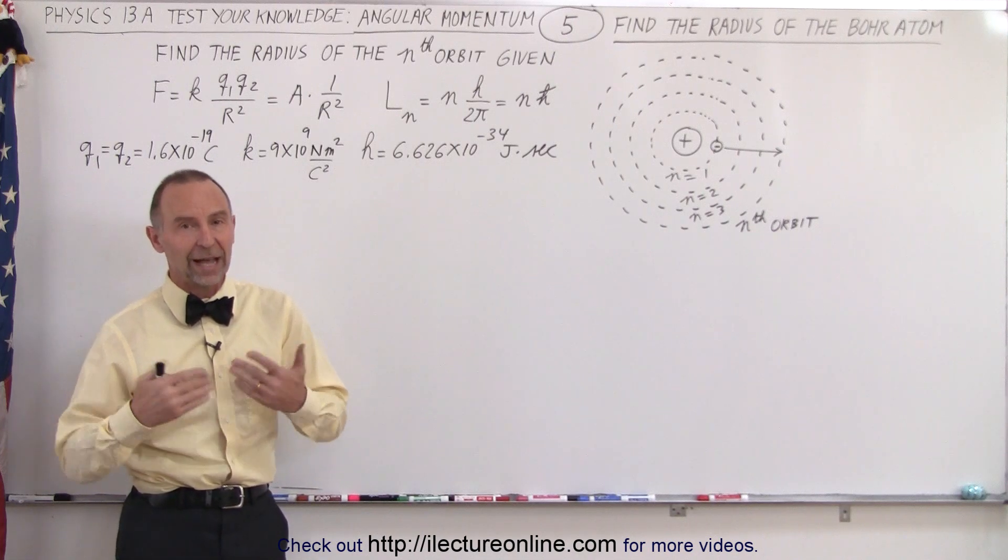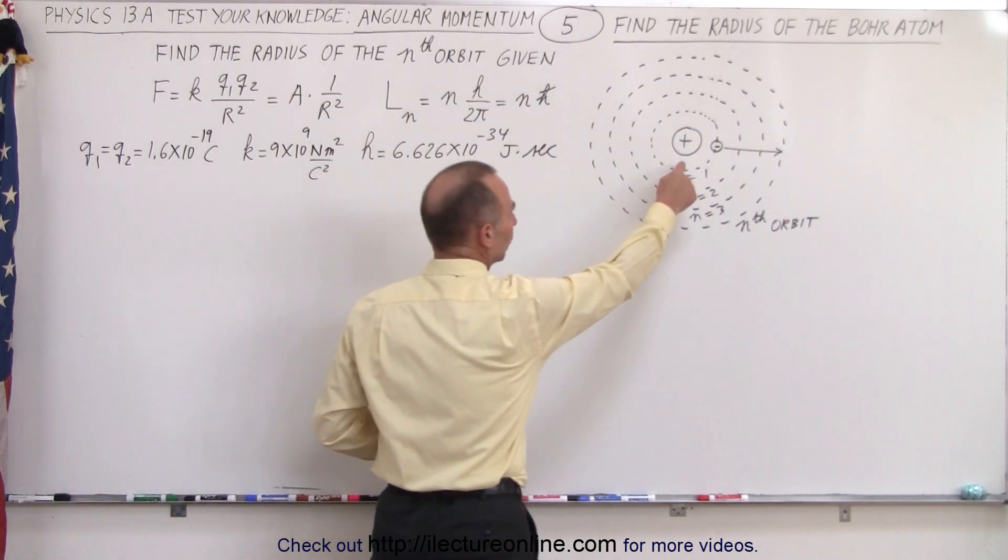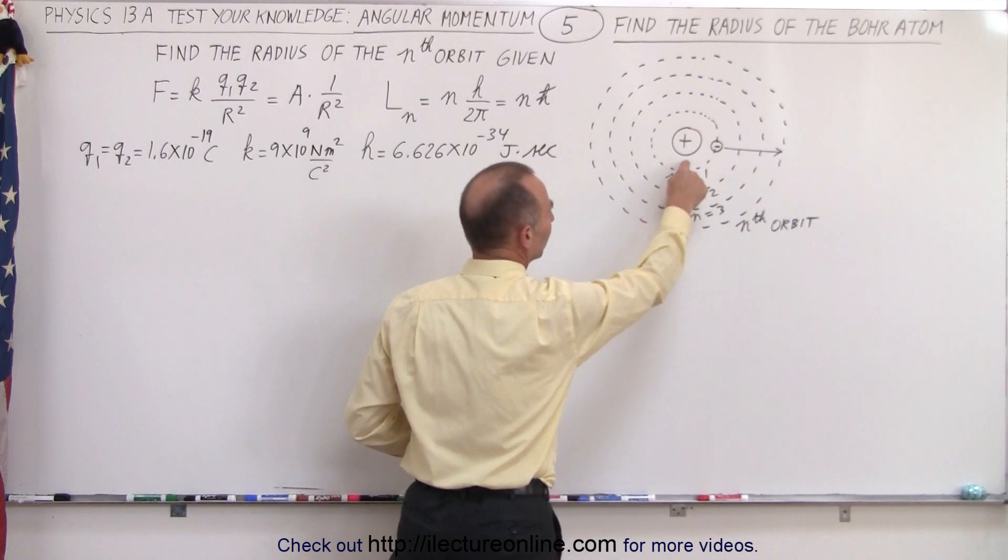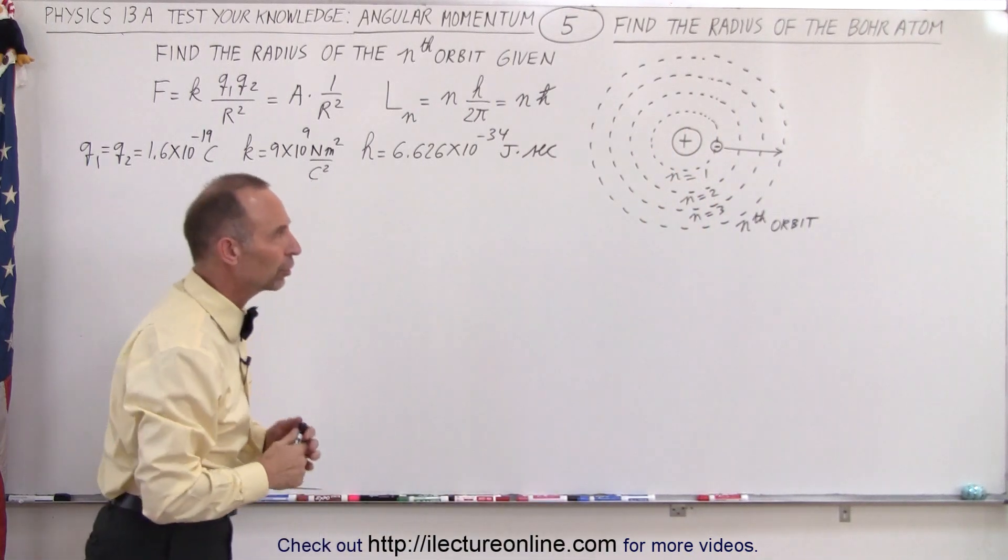The Bohr atom is the hydrogen atom, which consists of a single proton as a nucleus where most of the mass is concentrated and a single electron zipping around the nucleus.